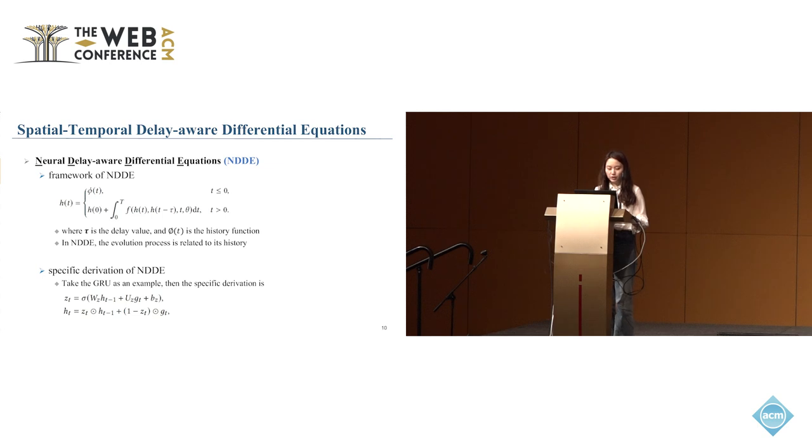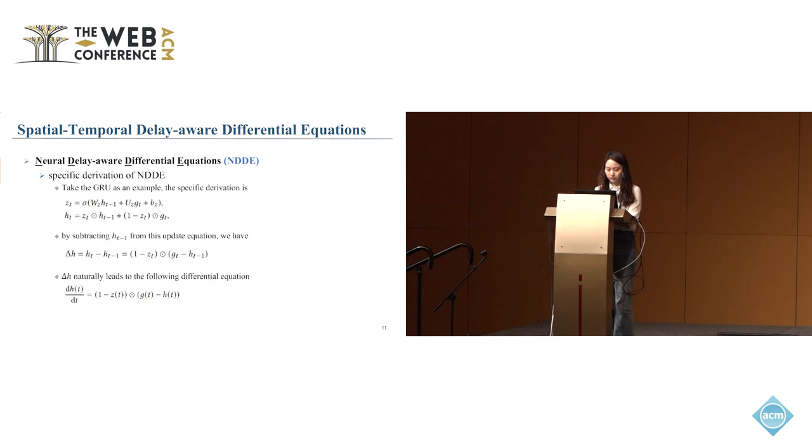In this paper, we take the GRU as an example, and the specific derivation can be defined as the following equations. Then we subtract the edge from its previous hidden states, and now we have the third edge. The third edge in the ODE equation framework naturally leads to the following diffusion equations.